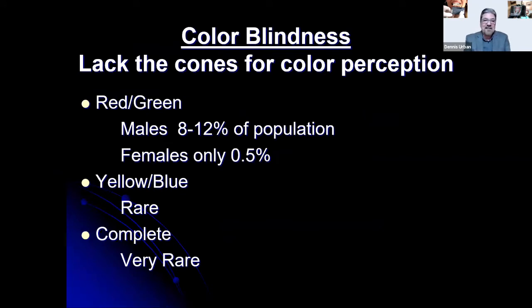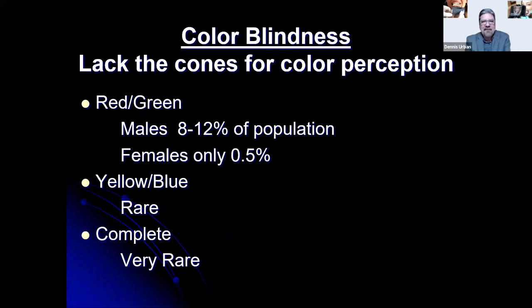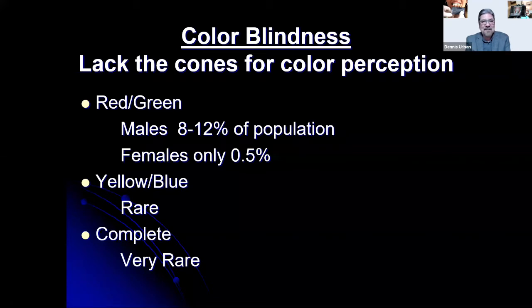Color blindness is a lack of cones for color perception. In males, 8–12% of the population are colorblind; in females it's only 0.5%. An interesting story: when visiting a porcelain denture teeth manufacturer in Germany, all 30–35 technicians hand-layering acrylic to match shades were female. When asked why no male technicians, they explained that male technicians have more colorblindness — so they only hired females for that task. Complete colorblindness is very rare.